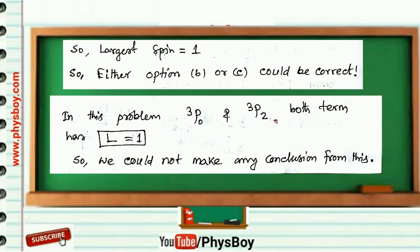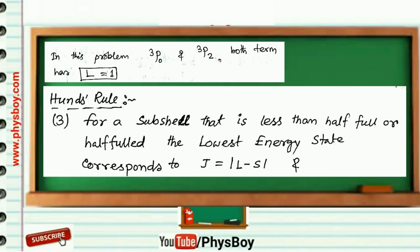So we have to go for Hund's rule number 3. That is, for a subshell that is less than half full or half full, the lowest energy state corresponds to J equals modulus of L minus S.